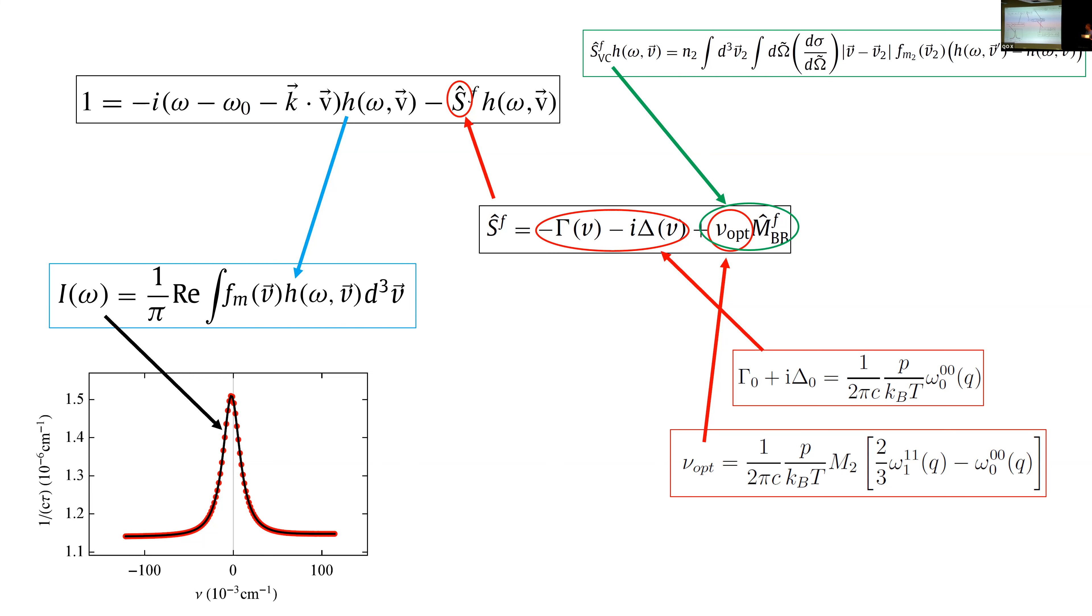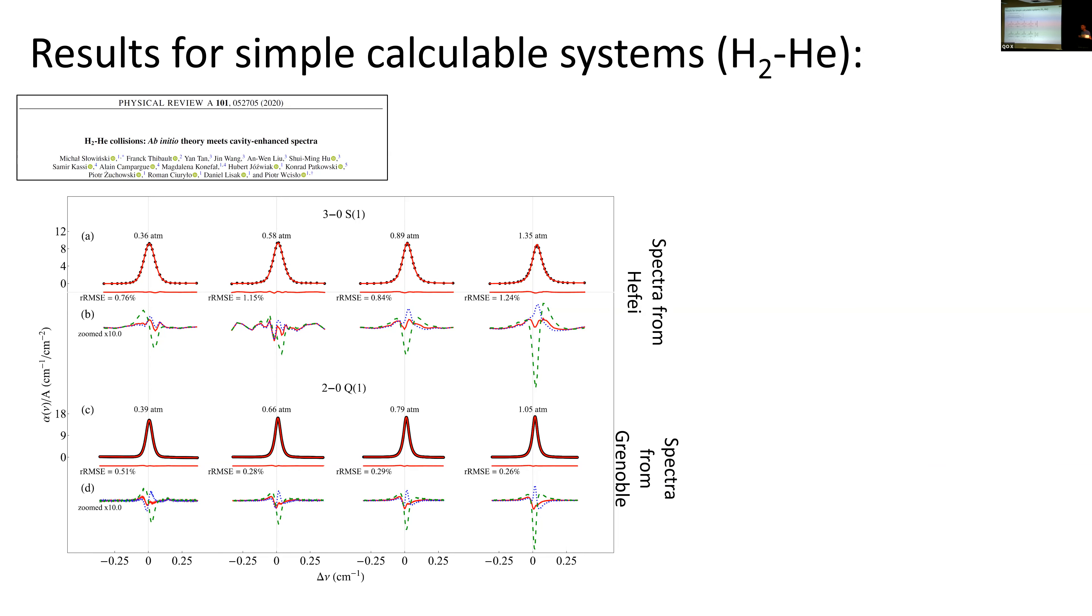This is a very short introduction to our methodology. Here are the results. For this example, I took experimental results from our partners from Hefei, China and Grenoble, France. They measured... We considered at the beginning the simplest possible system, helium-perturbed H2. They measured different lines. The black points are experimental data and the red curves are our theory. The important thing is that we superimposed our ab initio calculations on the experimental spectra without fitting any collisional line shape parameter. This is the first time when people achieved such high accuracy. We agree with experiment at the sub-percent level.